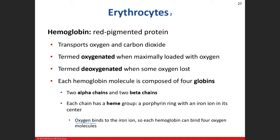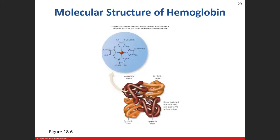If you don't have iron, you won't be able to bind oxygen to the heme group. Interestingly, if you replace the iron in the heme group with magnesium, you've just made chlorophyll. Chlorophyll and hemoglobin are almost identical structures — we as humans have iron at the center, while plants have magnesium.